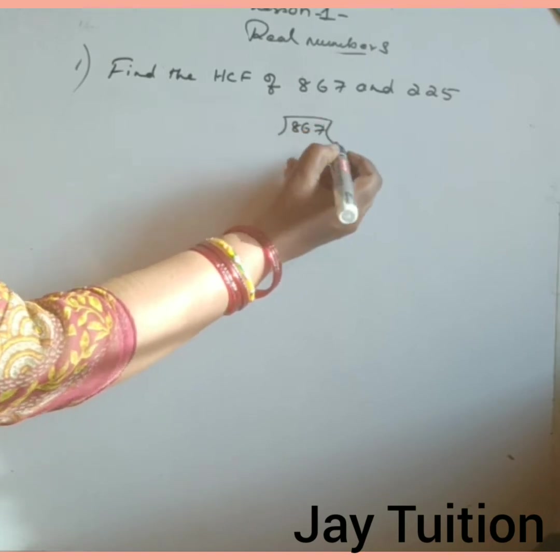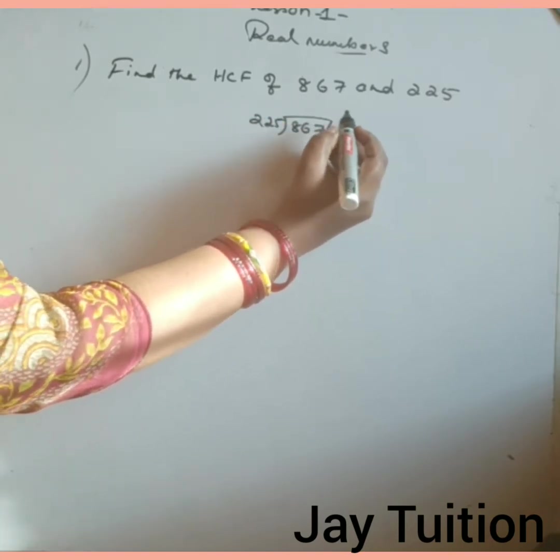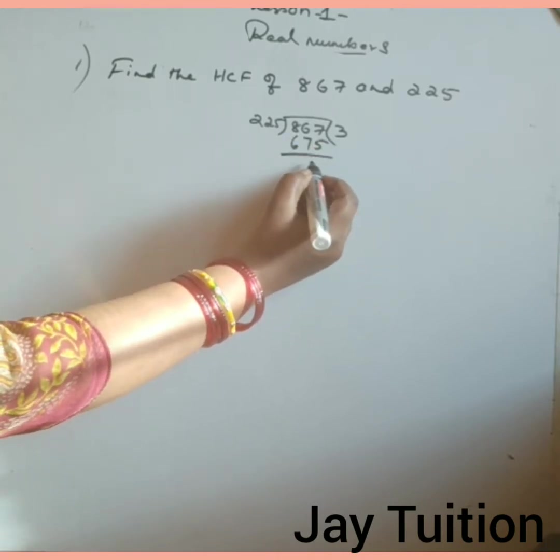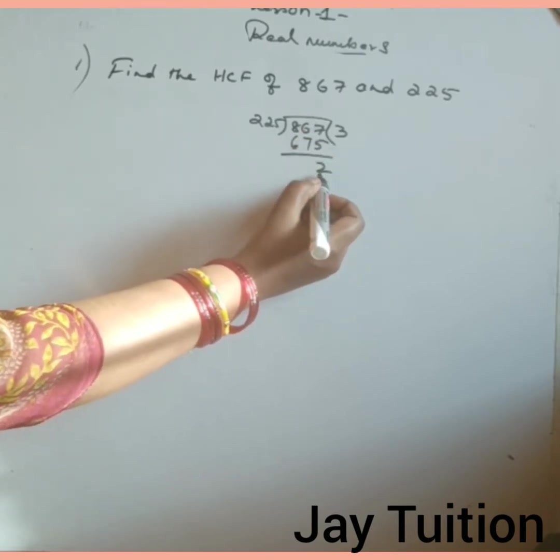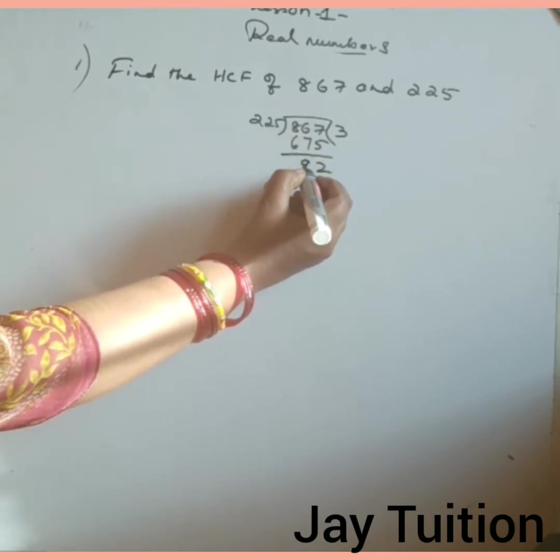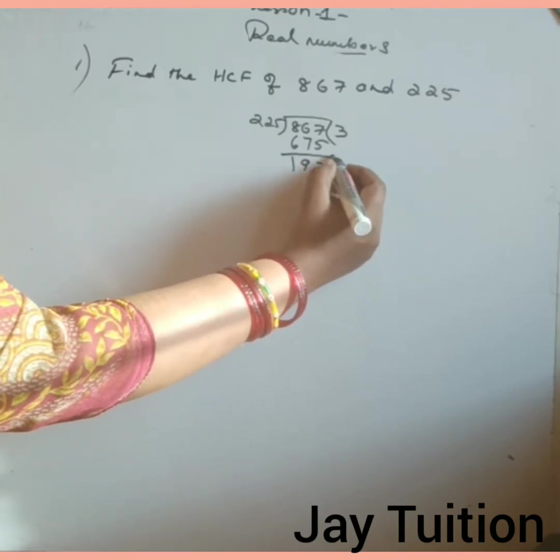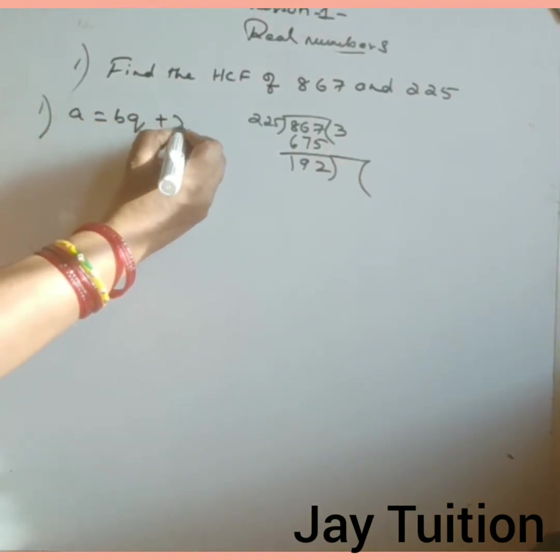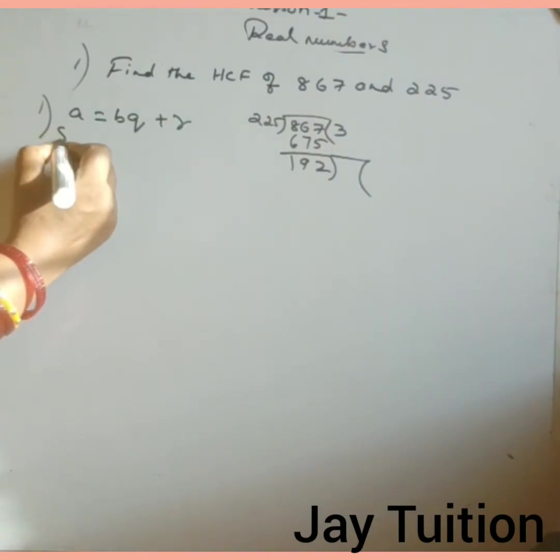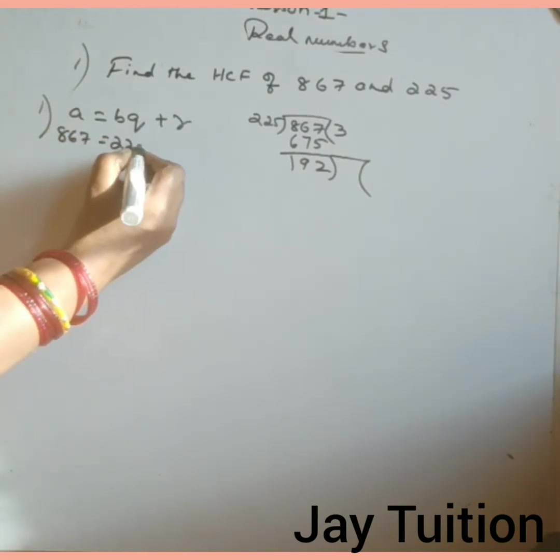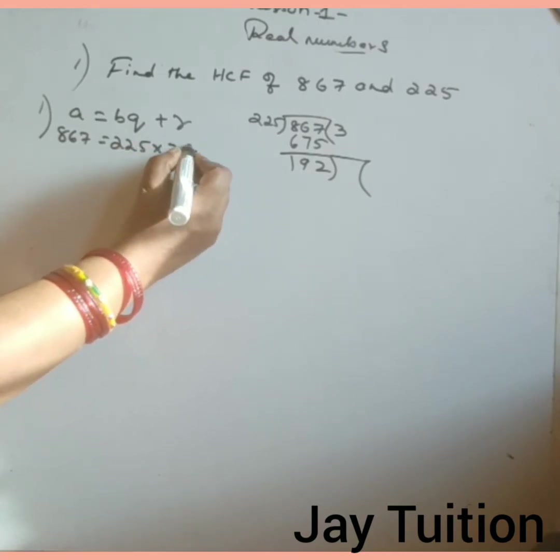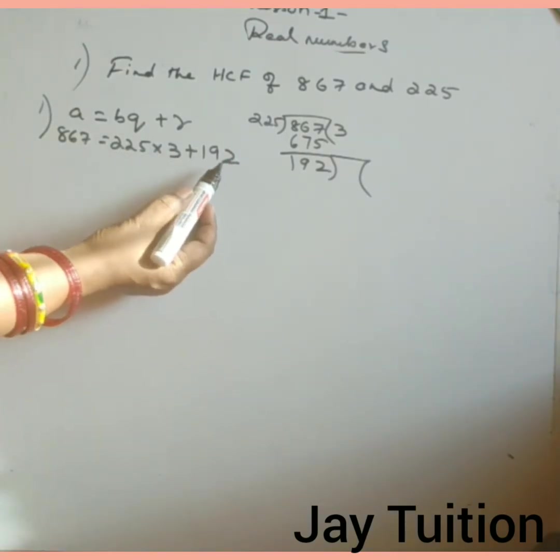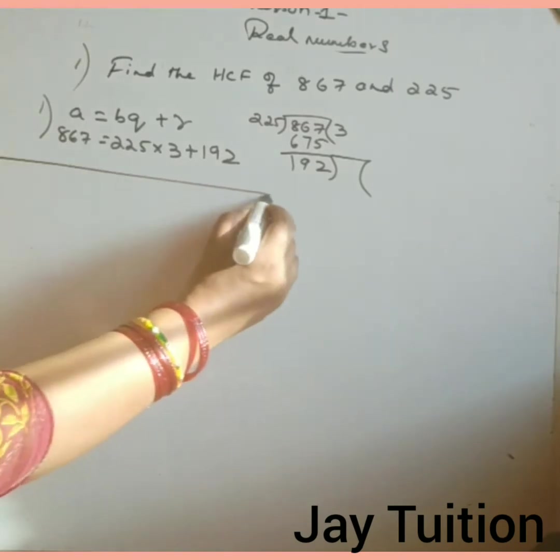867 divided by 225. 225 goes 3 times, that's 675. If you subtract, 7 minus 5 is 2, 16 minus 7 is 9, and 1, so 192. First step is over. A equals to BQ plus R: A is 867, B is 225 into Q is 3 plus remainder is 192. If you multiply 225 into 3 plus 192, you will get 867.